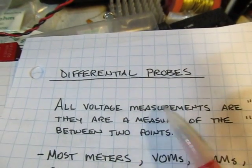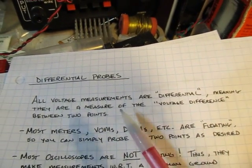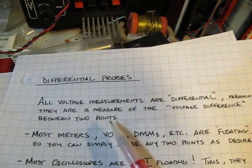Differential probes are typically used with oscilloscopes to make what we call differential measurements. And in a sense, really all voltage measurements can be considered differential, meaning that we're measuring the voltage between two points in a circuit.